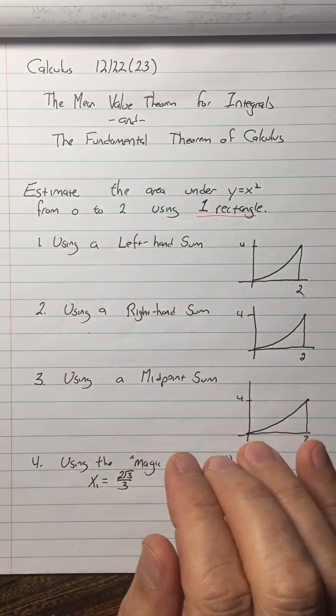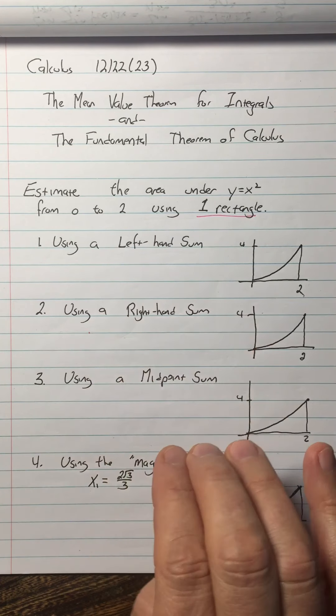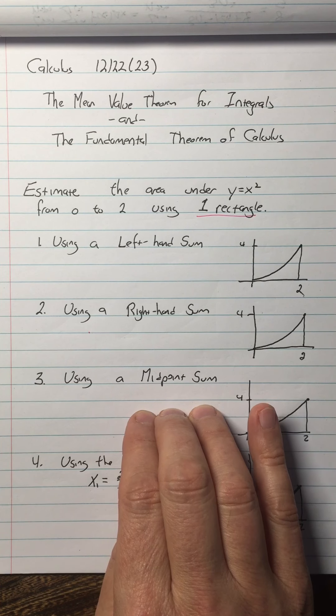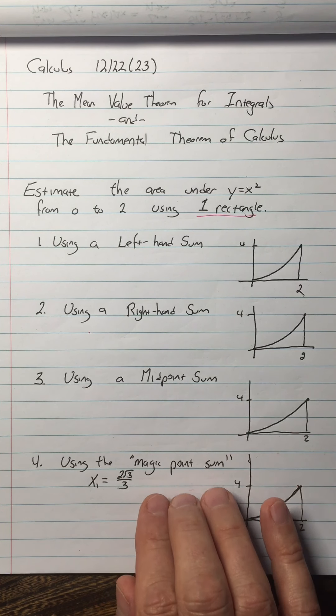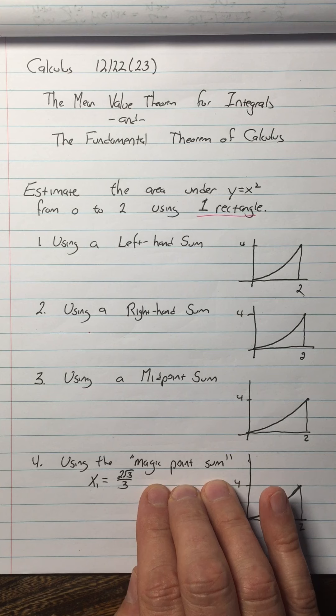We're going to use a left-hand sum, then a right-hand sum, then a midpoint sum, and then something I personally invented, the magic sum, the magic point sum.